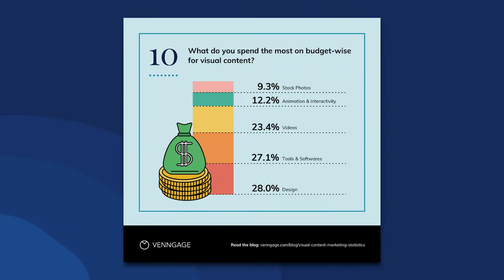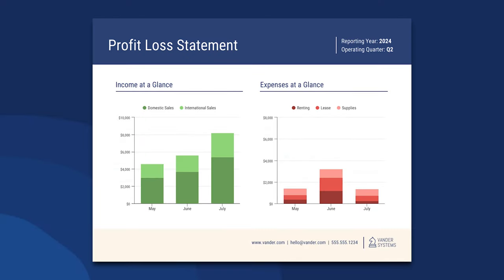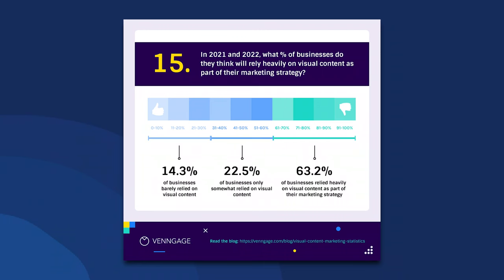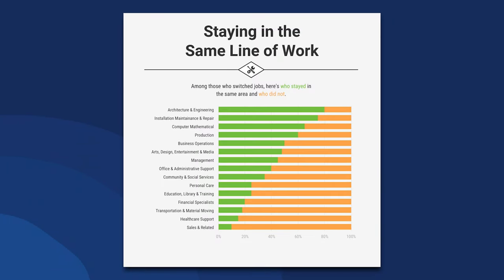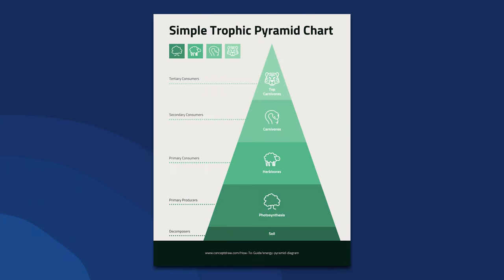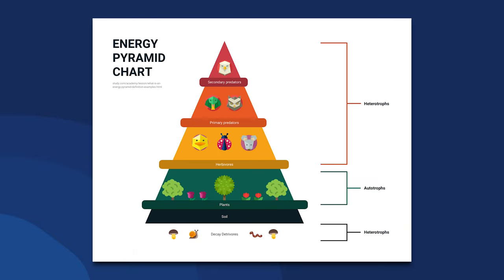Stacked bar charts come in various orientations and styles, including vertical stacked charts, horizontal stacked charts, pyramid stacked bar charts, and illustrative nature-themed stacked bar charts. A stacked column chart is a useful tool for determining a trend over time.